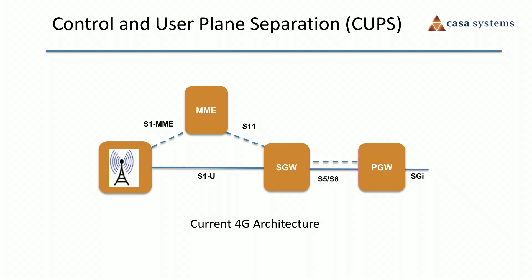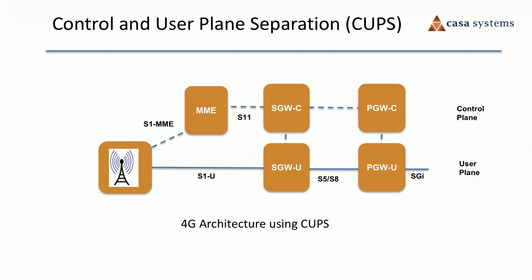In this demonstration, we'll focus on CASA's implementation of CUPS, which stands for Control and User Plane Separation. As you can see in the diagram, the standard 4G core architecture does not make use of CUPS — the P and S gateway both handle user and control planes. 4G CUPS was introduced in 3GPP release 14 in mid-2017. The user plane and control plane elements of key virtual network functions are separated and can scale independently.